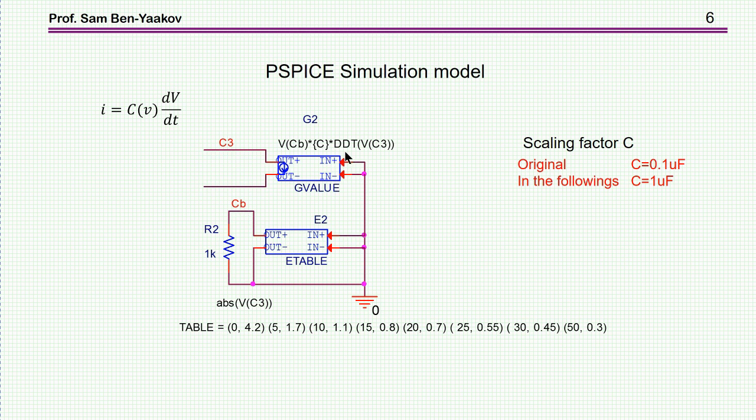This is a current source which is defined, first of all, as the derivative d/dt, time derivative of the voltage of C3. In the actual circuit that I'm going to show, this is going to be ground. Strictly speaking, this should have been C3 minus the voltage here. That is, the derivative is the voltage across the capacitor. I'm assuming here that this is ground, so this is why it's only C3.